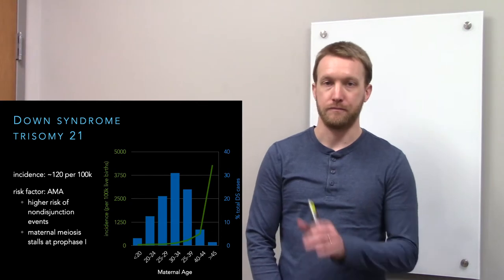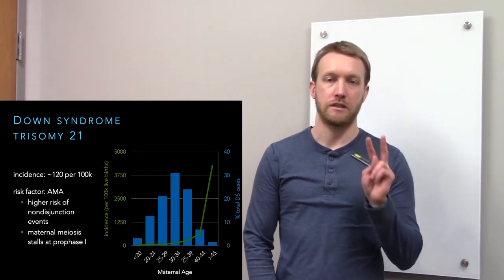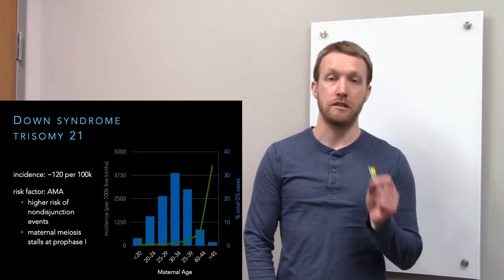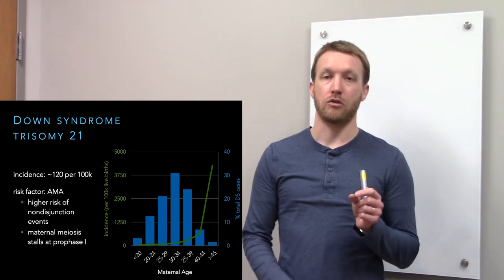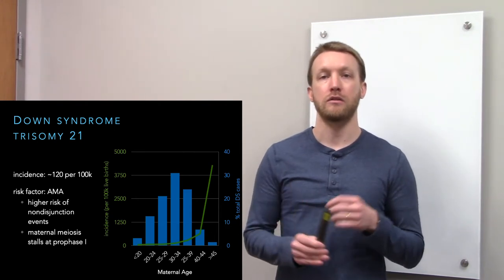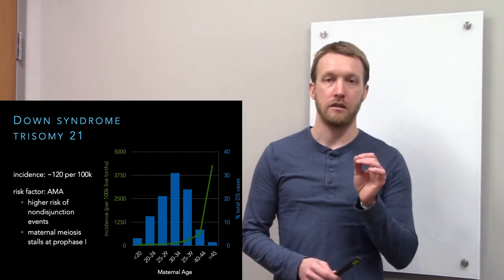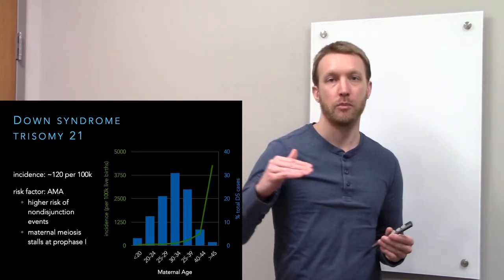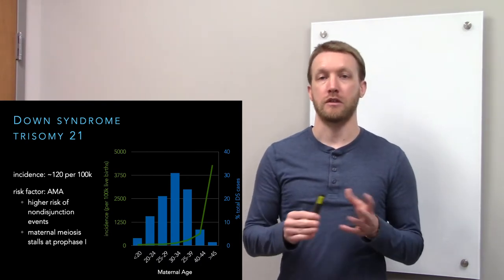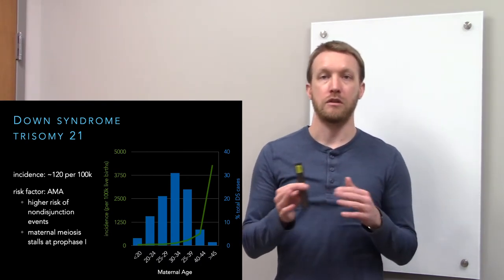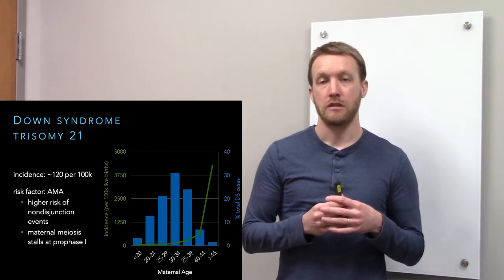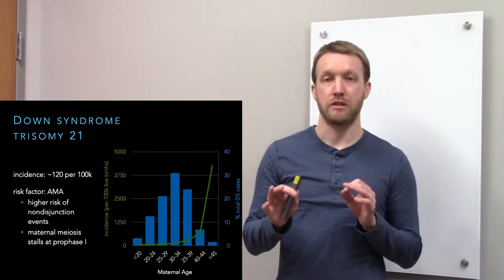Let's have a look at the graph. The green line is showing you the incidence of Down syndrome across different maternal ages. As you move along the x-axis from left to right, we're going from younger to older mothers. The green line has a sharp upturn once we get to advanced maternal age. The strict definition would be 35 and older. Really we see the greatest risks once we're above 45 years of age.